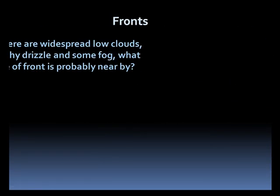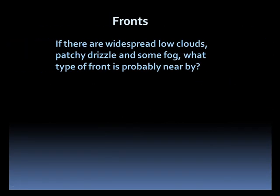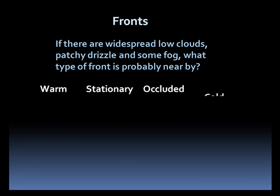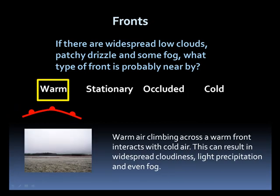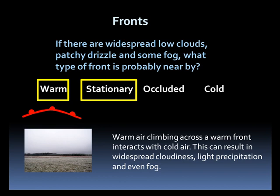If there are widespread low clouds, patchy drizzle, and some fog, what type of front is probably nearby? Would it be a warm front, stationary, occluded, or a cold front? It's most likely a warm front. Warm air rising across the warm front into cold air can lead to widespread low clouds and possibly some fog or precipitation. However, it could also be a stationary front, as stationary fronts can act like warm fronts.